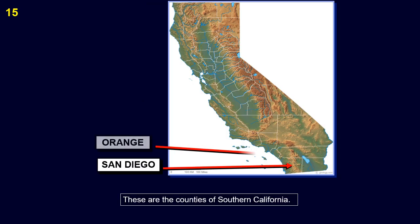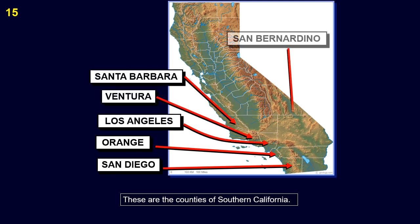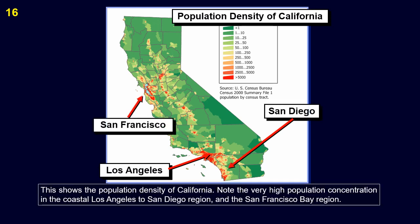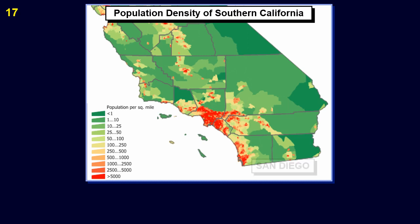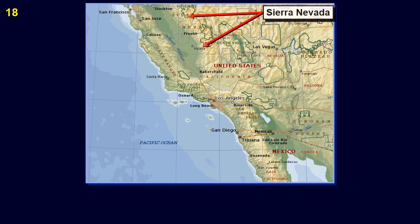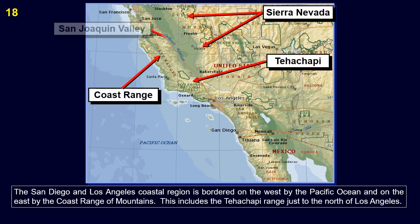San Diego and Los Angeles are both in southern California. These are the counties of southern California. This shows the population density of California. Note the very high population concentration in the coastal Los Angeles to San Diego region and the San Francisco Bay region. We note again the very high population concentration along the coast from Santa Barbara and Ventura counties through Los Angeles and Orange counties down to San Diego County and the border with Mexico.